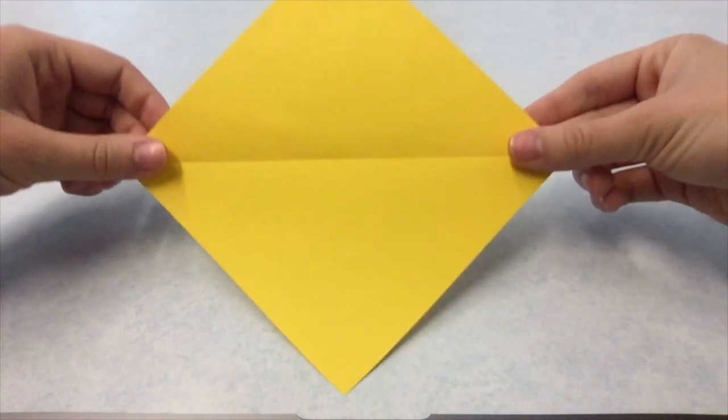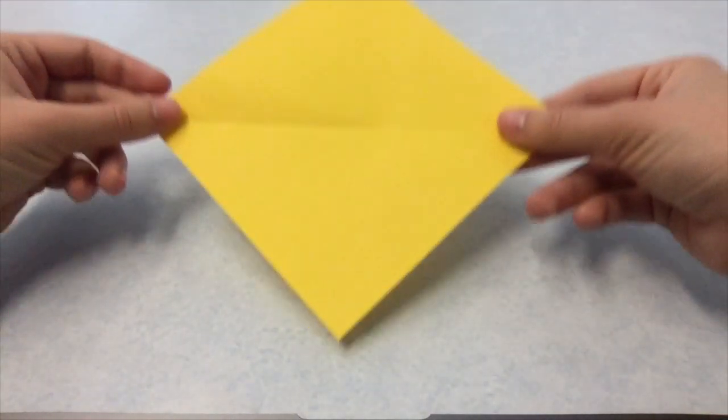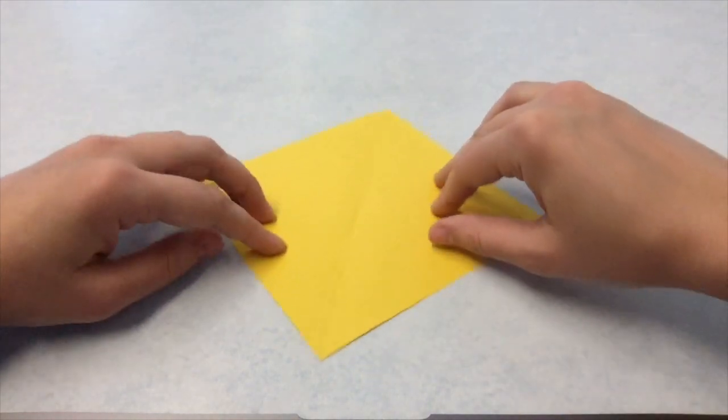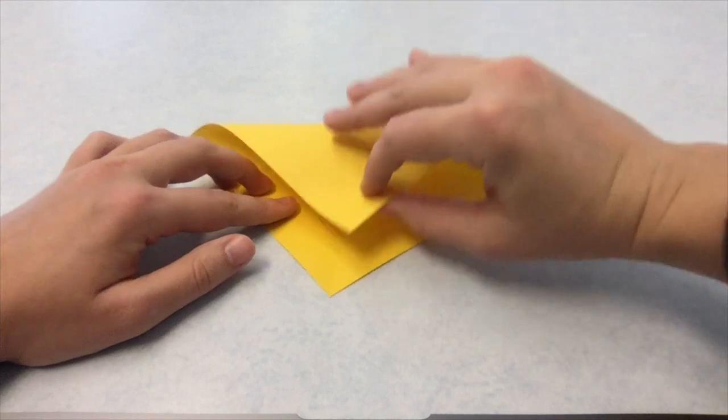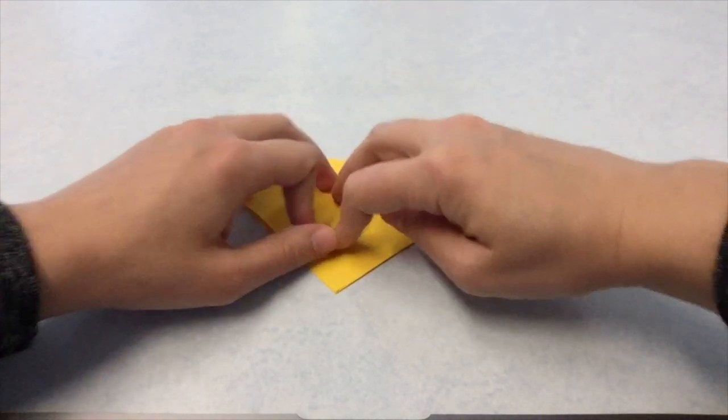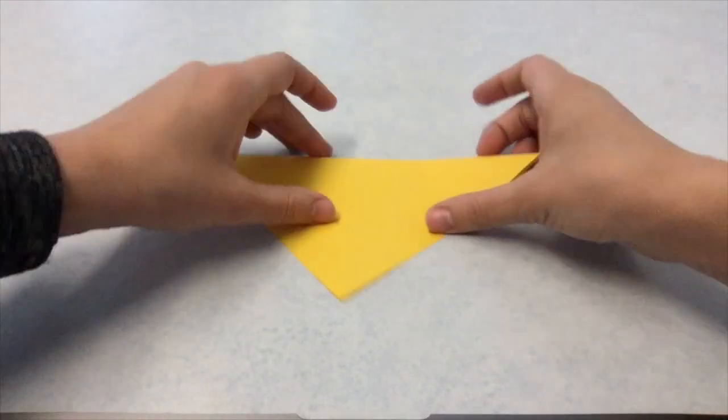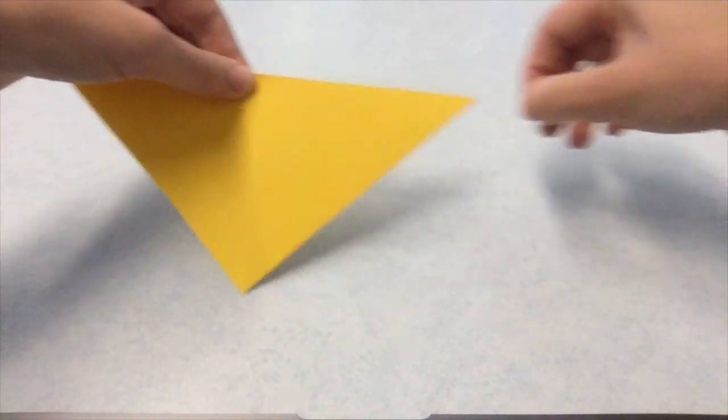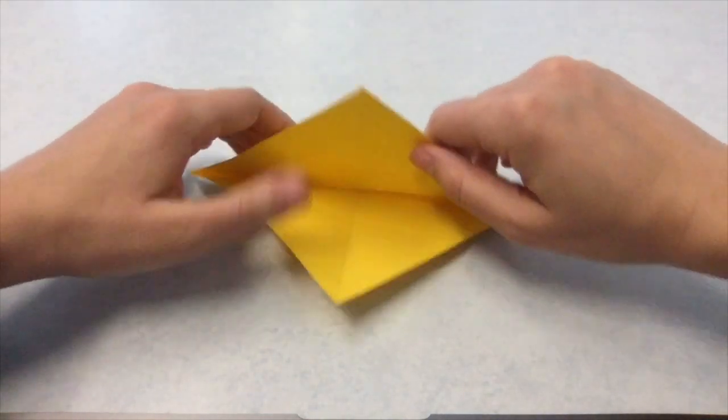Open the paper up again. You should see a guideline that you've created going across the center of your paper. Let's create another guideline. Rotate the paper and match the corners just like we did before, pressing down to create that triangle shape again. When you open up the paper again, you should see two lines crossing perpendicular to each other in the center of the paper.